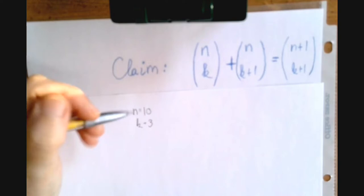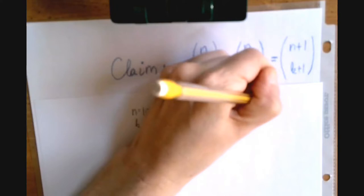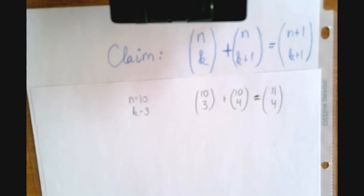To make it a little concrete, let's say that n is 10 and k is 3. Then this statement becomes 10 choose 3 plus 10 choose 4 equals 11 choose 4. That's kind of a strange statement. As it turns out it's true and we're going to see several proofs for this.